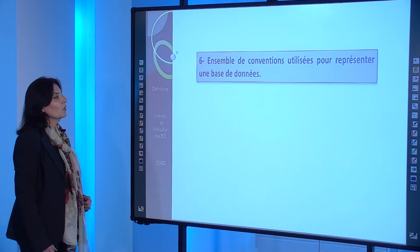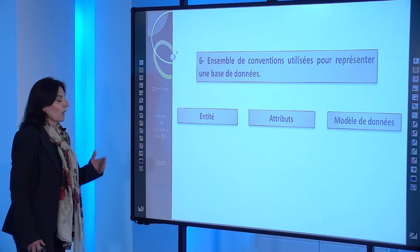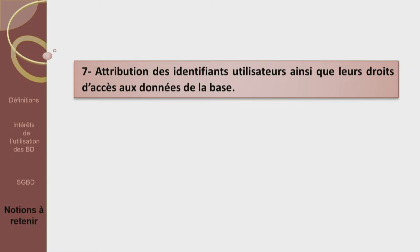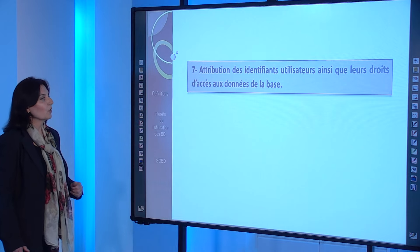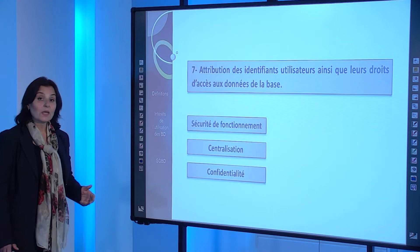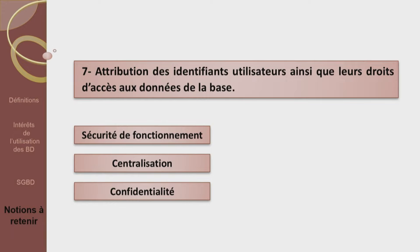Sixième définition : ensemble de conventions utilisées pour représenter une base de données. Est-ce une entité, un attribut ou bien un modèle de données ? Ce n'est pas une entité, ce n'est pas un attribut. C'est évidemment le modèle de données. Septième définition : l'attribution des identifiants utilisateurs ainsi que leur droit d'accès aux données de la base. S'agit-il de la sécurité de fonctionnement, de la centralisation ou bien de la confidentialité ? Ça ne peut pas être la sécurité de fonctionnement, ni la centralisation. C'est bien sûr la confidentialité.